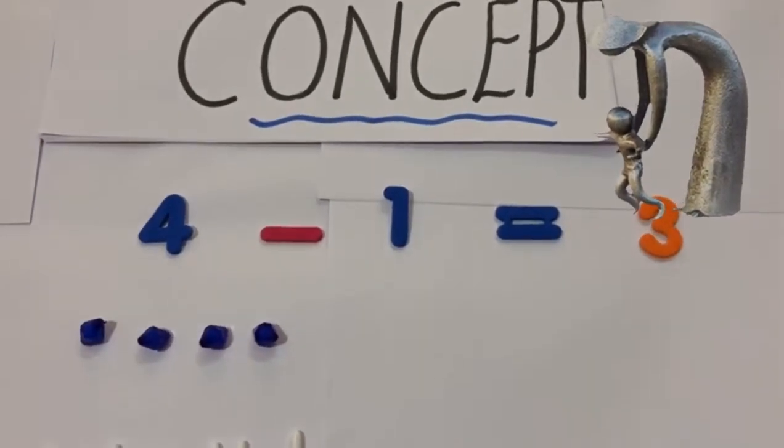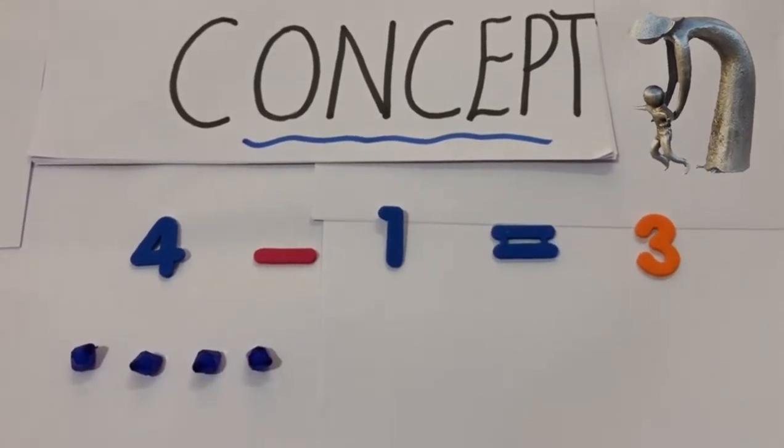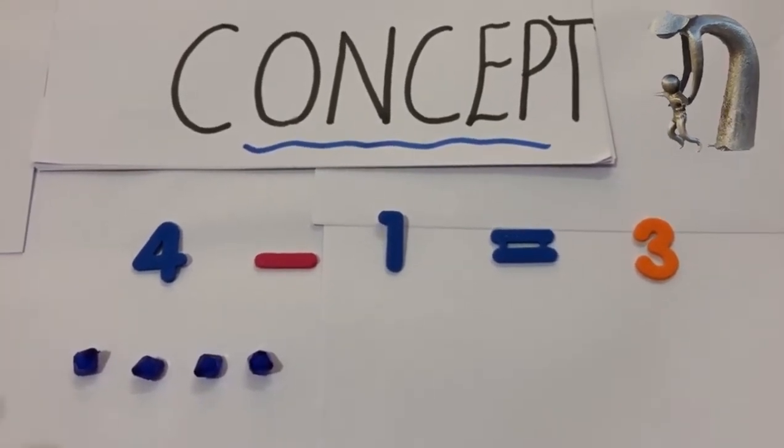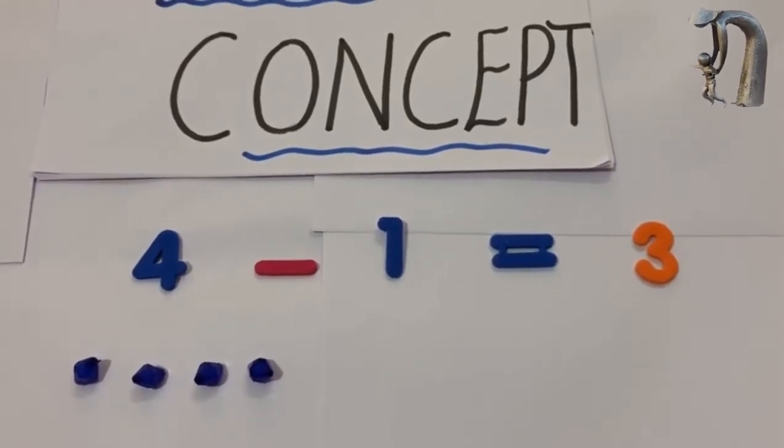So these are the prerequisites: counting, identifying the number and checking the symbol, removing or adding. These are the words that the child should be able to recognize.